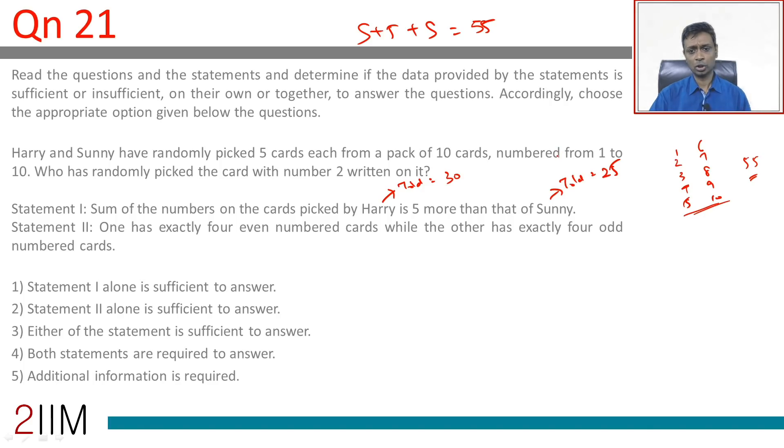Now one set of totals adds up to 25, the other adds up to 30. We need to know who has two in it. I'm going to rephrase this question: let Harry have two and Sonny not have two, and the other way around. If you can create a scenario for both of them, then we are through, and then we can say statement one is not sufficient.